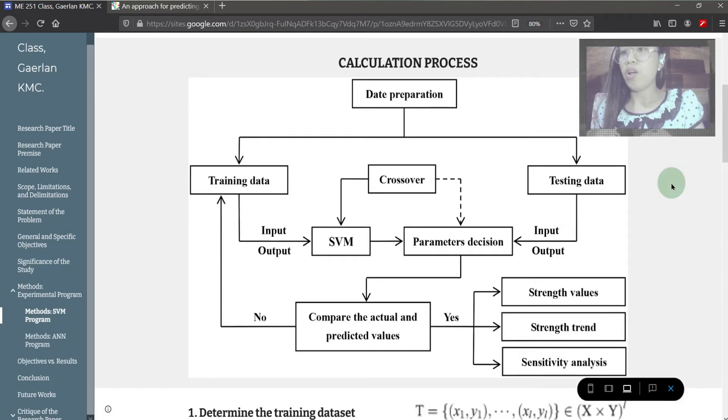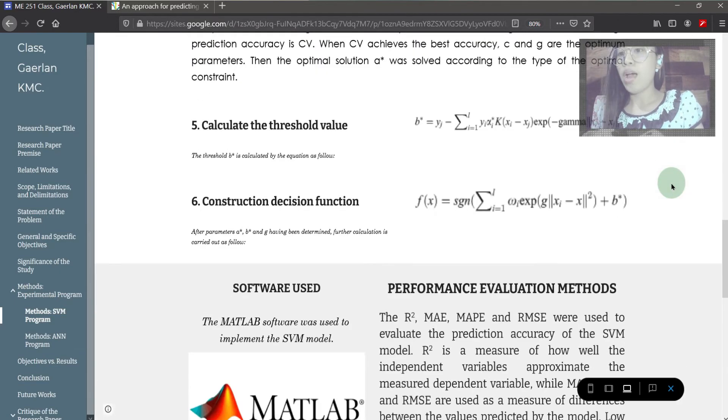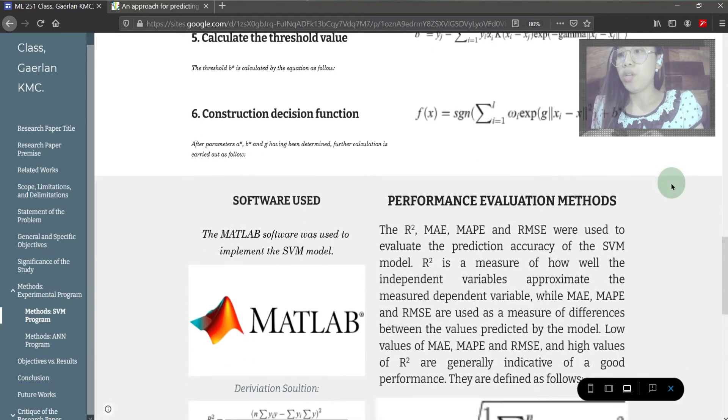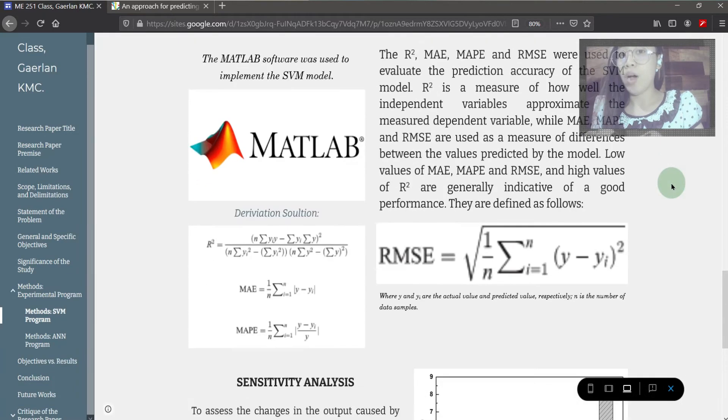The calculation process on deriving SVM results starts on determining the training dataset, followed by choosing the appropriate kernel function, solving the optimization problem, optimizing the parameter, calculating the threshold value, and constructing the decision function. Note that MATLAB software was used in implementing the SVM model.